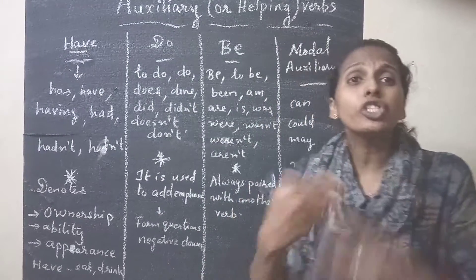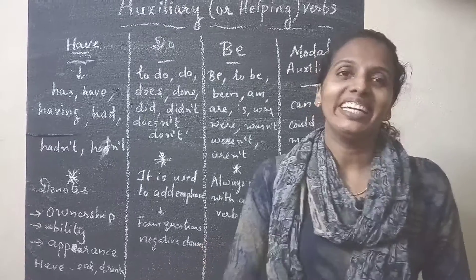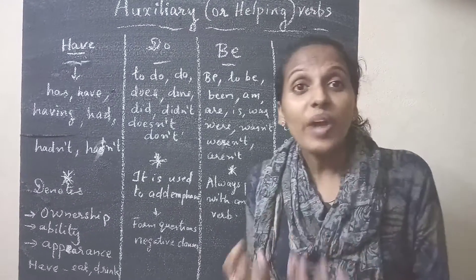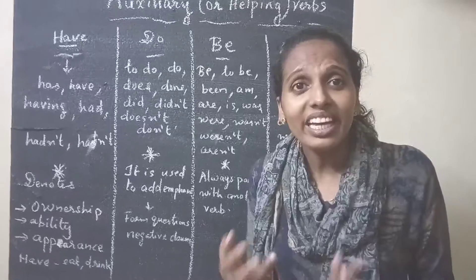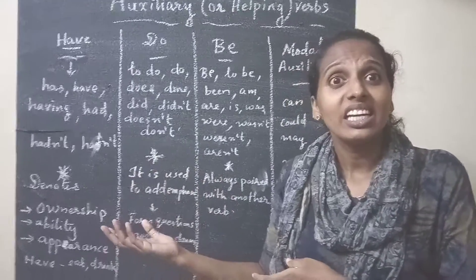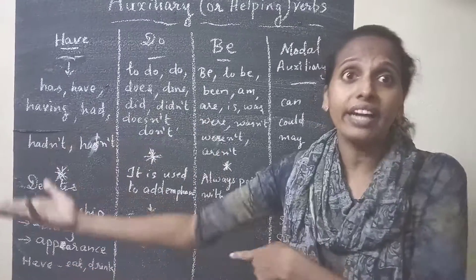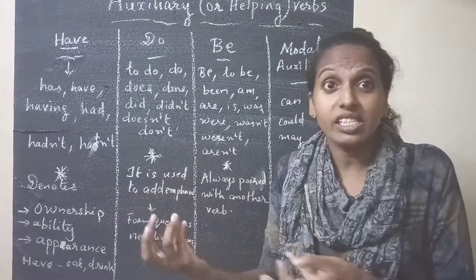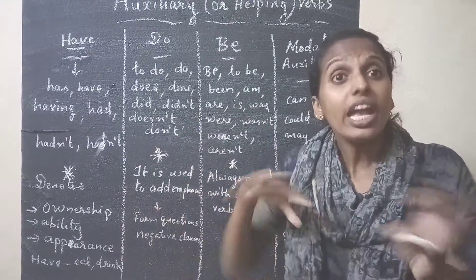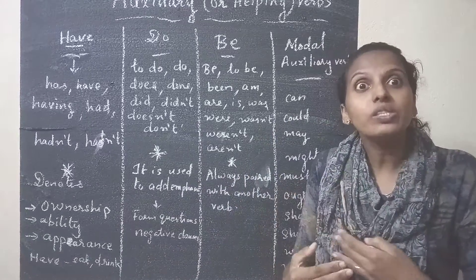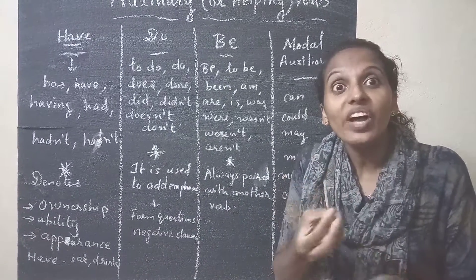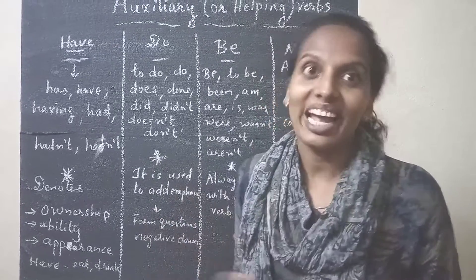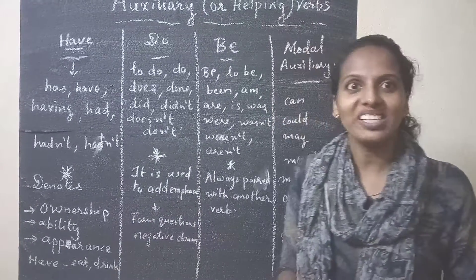Additionally, 'have' can substitute for 'eat' and 'drink.' For example: 'I had my breakfast,' 'Do you have your breakfast?' and 'She has had breakfast' or 'She had her breakfast.' For negatives, we say 'She hasn't' or 'She hadn't.' So we use 'have' instead of saying eating or drinking — 'I had my lunch,' 'I had my breakfast.'